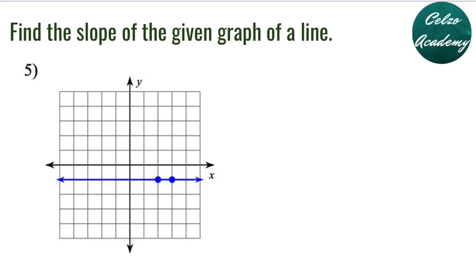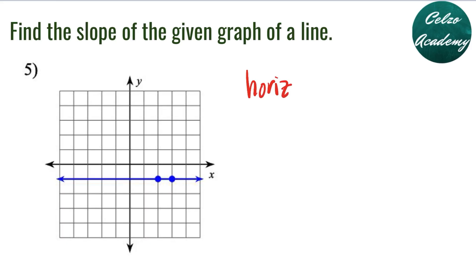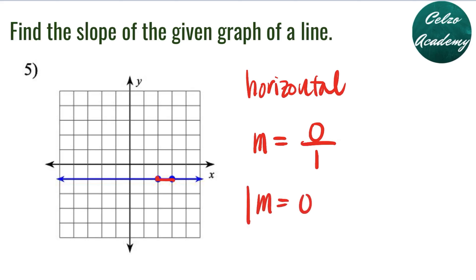Question number 5: find the slope of the given graph. Question number 5 is a horizontal line. Notice that from the left point, the graph didn't go up or down, so rise is 0. From the left point, it went 1 unit to the right, so run is positive 1. And 0 divided by 1 is 0, so the slope is 0. Remember that the slope of a horizontal line is always 0.